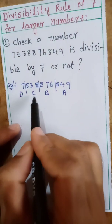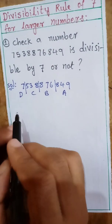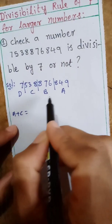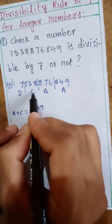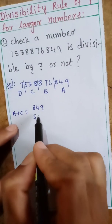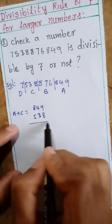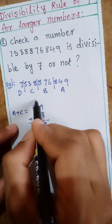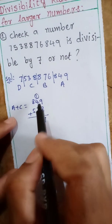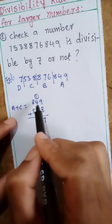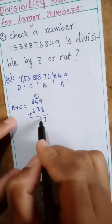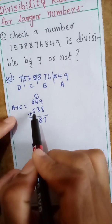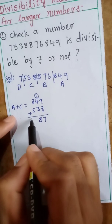Now we have to add A and C. A equals 849. C equals — adding: 9 plus 8 is 17, carry 1; 1 plus 4 is 5; 5 plus 3 is 8. Then 8 plus 5 gives 13. So A plus C equals 1387 (after carrying through the addition steps).